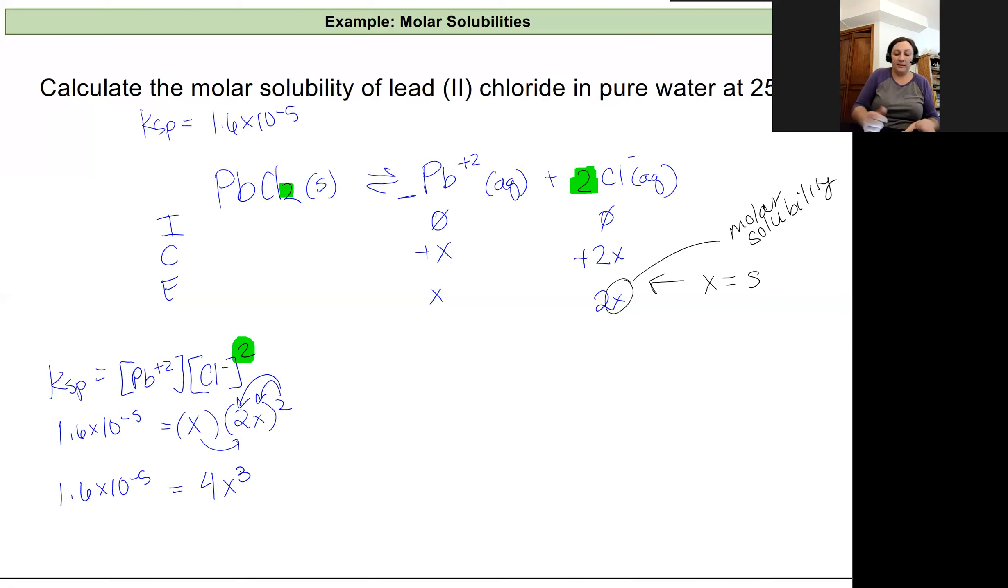So x is going to be equal to the cube root of our Ksp divided by 4. So that's going to be our 1.6 times 10 to the negative fifth divided by 4. If I plug that into my calculator, I'm going to get a value that is 1.58 times 10 to the negative 2. And my units on this are going to be molarity. And that is how you calculate your solubility product.